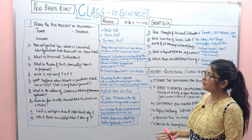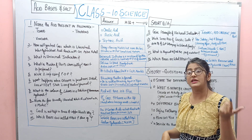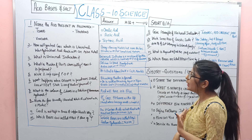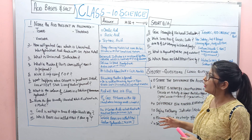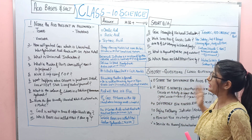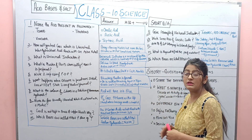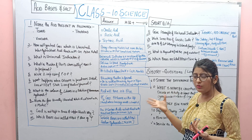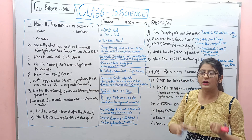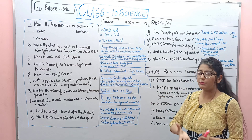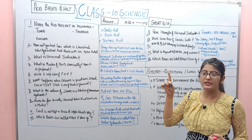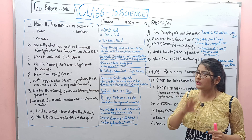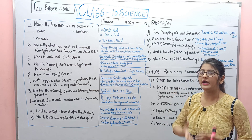Next question: How will you test which gas is liberated when hydrochloric acid reacts with an active metal? We have seen this experiment in our book. We bring a burning matchstick near the gas — it will burn with a pop sound. The burning with a pop sound indicates the presence of hydrogen gas. You may be given a statement and have to identify it.